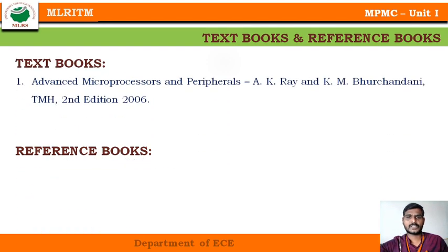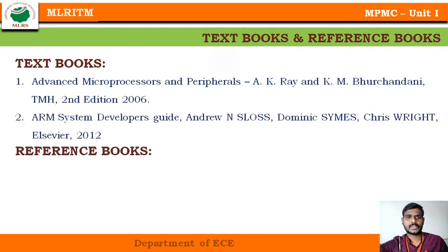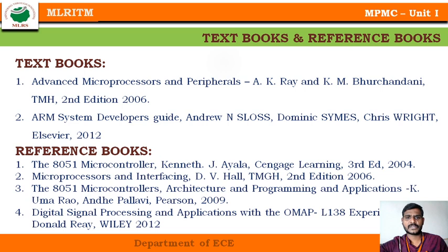Regarding textbooks and references: there is no single textbook available for all units. The first textbook recommended is 'ARM Microprocessors and Peripherals' by A.K. Ray, covering Units 1 and 2. For Units 4 and 5, 'ARM System Developer's Guide' by Andrew Sloss is recommended. Reference books include '8051 Microcontroller' by Kenneth Ayala, 'Microprocessors: Interfacing' by Douglas V. Hall, and '8051 Microcontroller: Architecture and Programming' by K. Uma Rao.